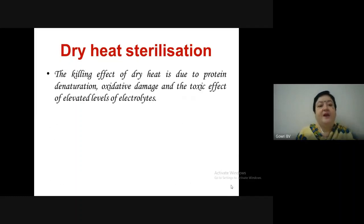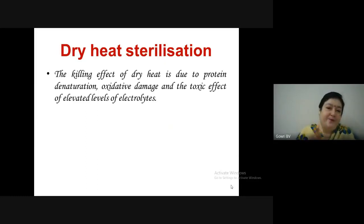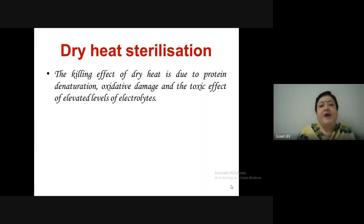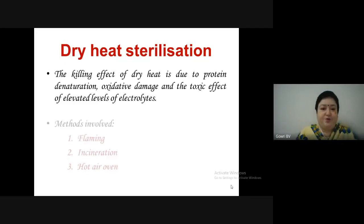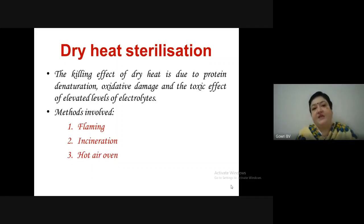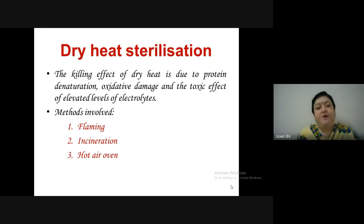The killing effect of dry heat is due to protein denaturation, oxidative damage, and the toxic effect of elevated levels of electrolytes. The three common methods of dry heat sterilization used in microbiology are: flaming (red heat), incineration, and the use of a hot air oven.